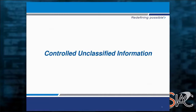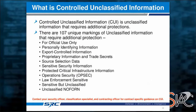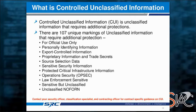Now let's go deeper into what controlled unclassified information is. Controlled unclassified information is unclassified information that requires additional protections. There are 107 published designators — I've heard it's as high as 150-something different designators — for unclassified information that isn't releasable without FOIA. There's a disclaimer on every slide: contact your security officer, classification specialist, and contracting officer to understand your company's controlled unclassified information. Identifying what you're attempting to protect is probably the most difficult part.